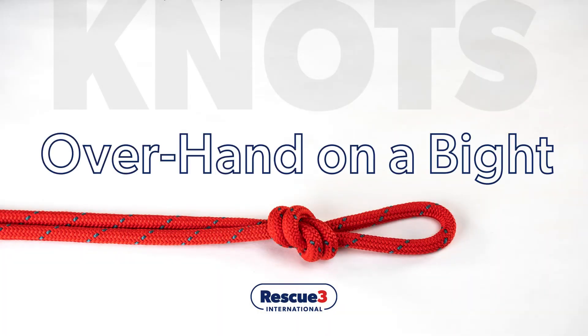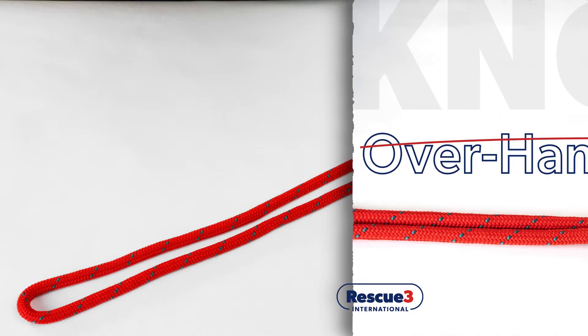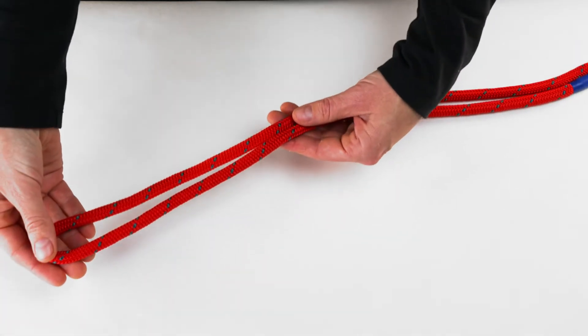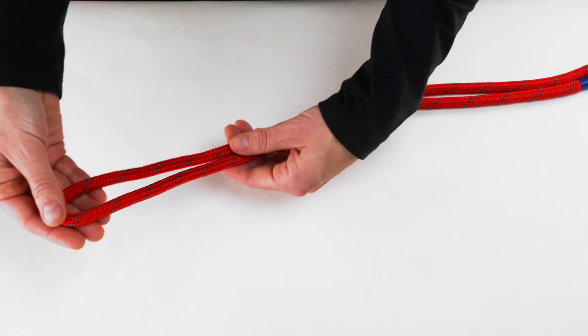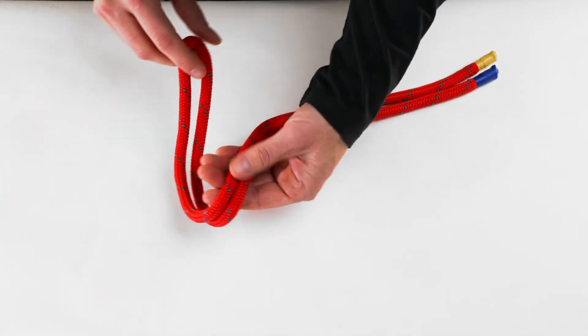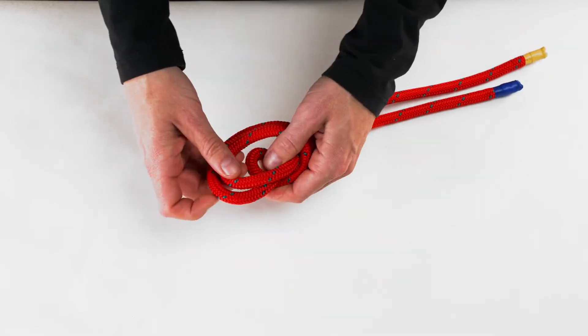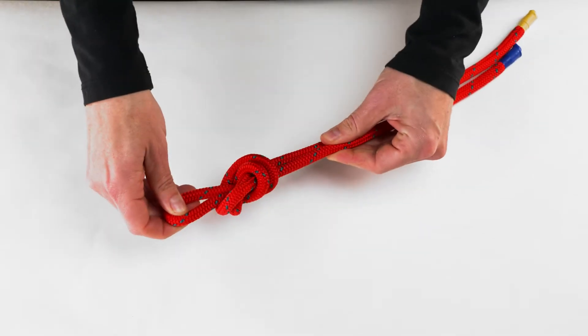Overhand on a bite. To tie an overhand on a bite, form a bite in the section of rope where you want to tie the knot. Cross the bite over the standing strands to form a loop. Pass the bite under the loop and pull it through the loop.